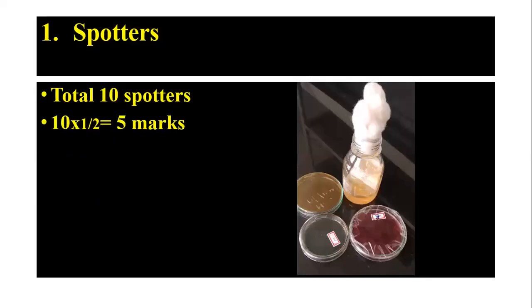For the first exercise — spotters — they will provide 10 spotters. You have to identify each spotter and write the name. Each spotter carries half a mark, so 10 into half equals five marks total for spotters.